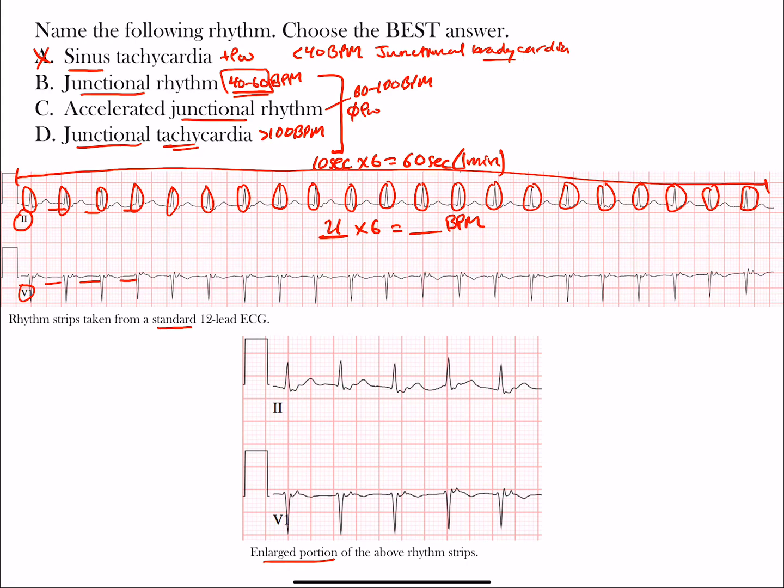21 times 6 equals 126. That's a rate over 100, putting us within this range here, over 100 beats per minute. Since B, C, and D are differentiated based on rate, we can already tell the answer is choice D, junctional tachycardia.